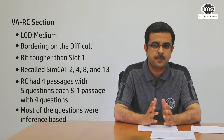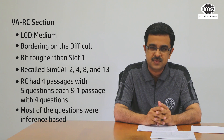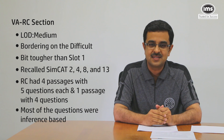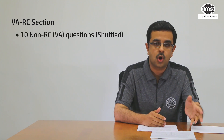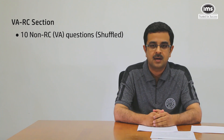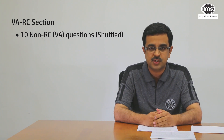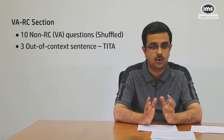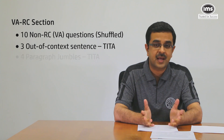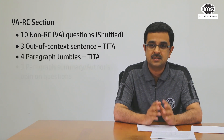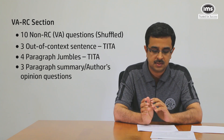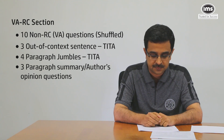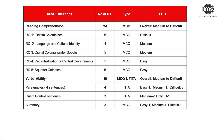The passage lengths varied from about 400 to 500 words. Similar to last year's CAT, the paragraph jumble questions consisted of 4 jumbled sentences. Of the 10 non-RC verbal ability questions, 3 were MCQs and 7 were TITA-based. The 3 out-of-context sentence questions were all TITA-based, the 4 paragraph jumble questions were all TITA-based, and the 3 paragraph summary or author's opinion questions were MCQs with negative marking.